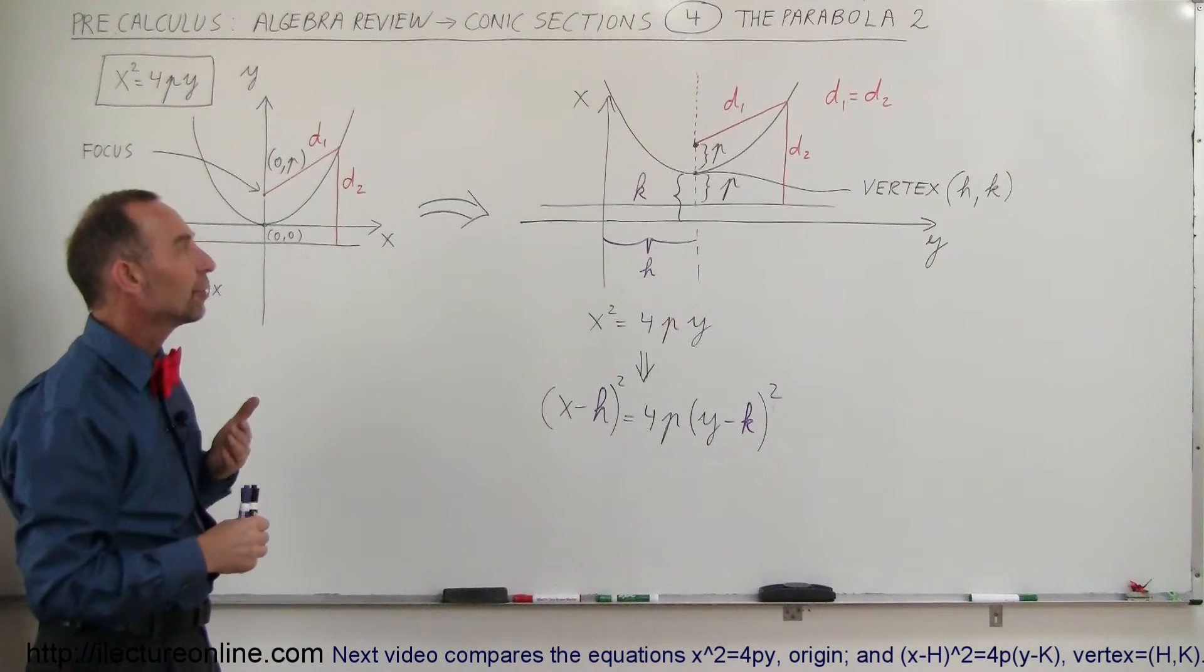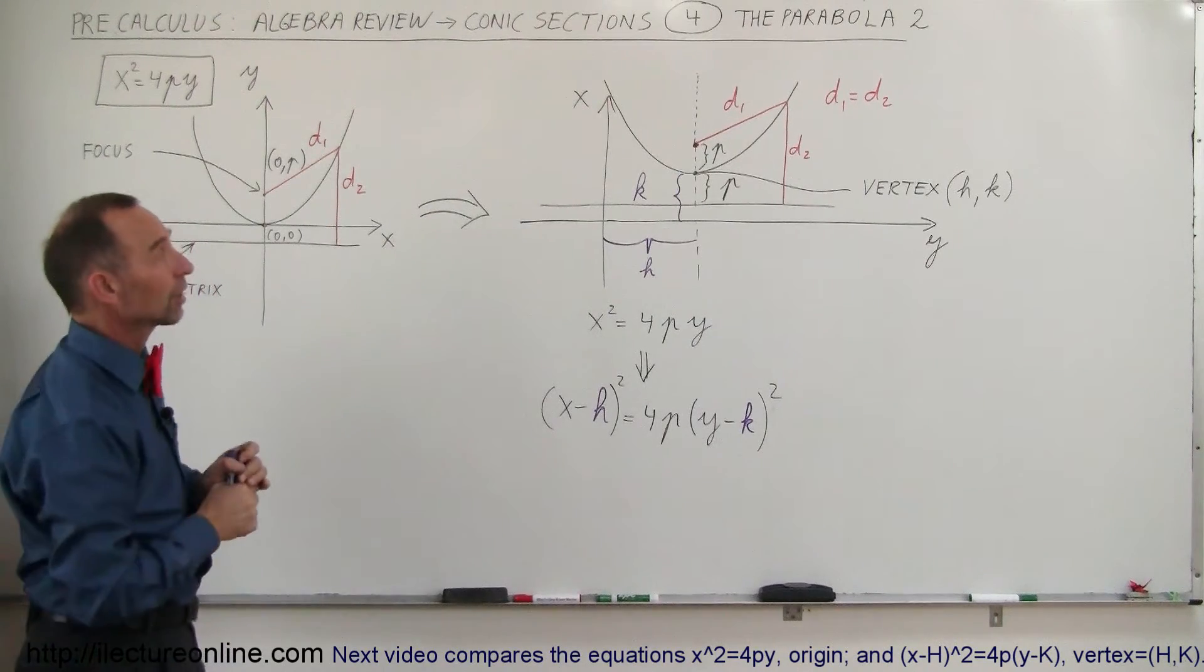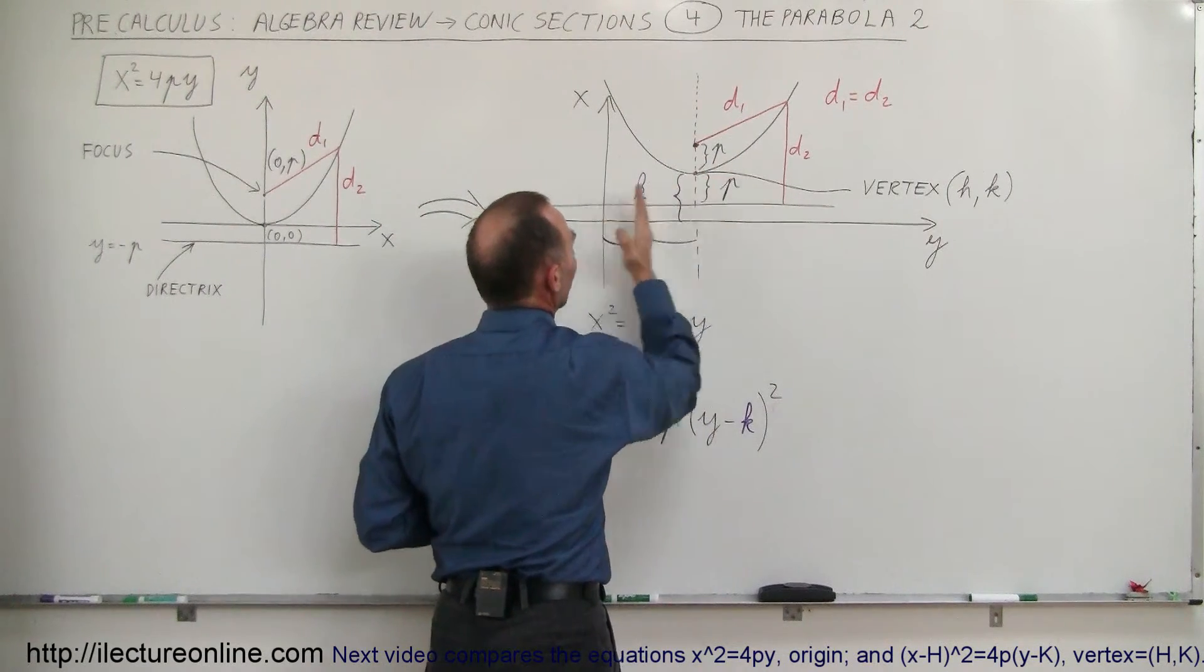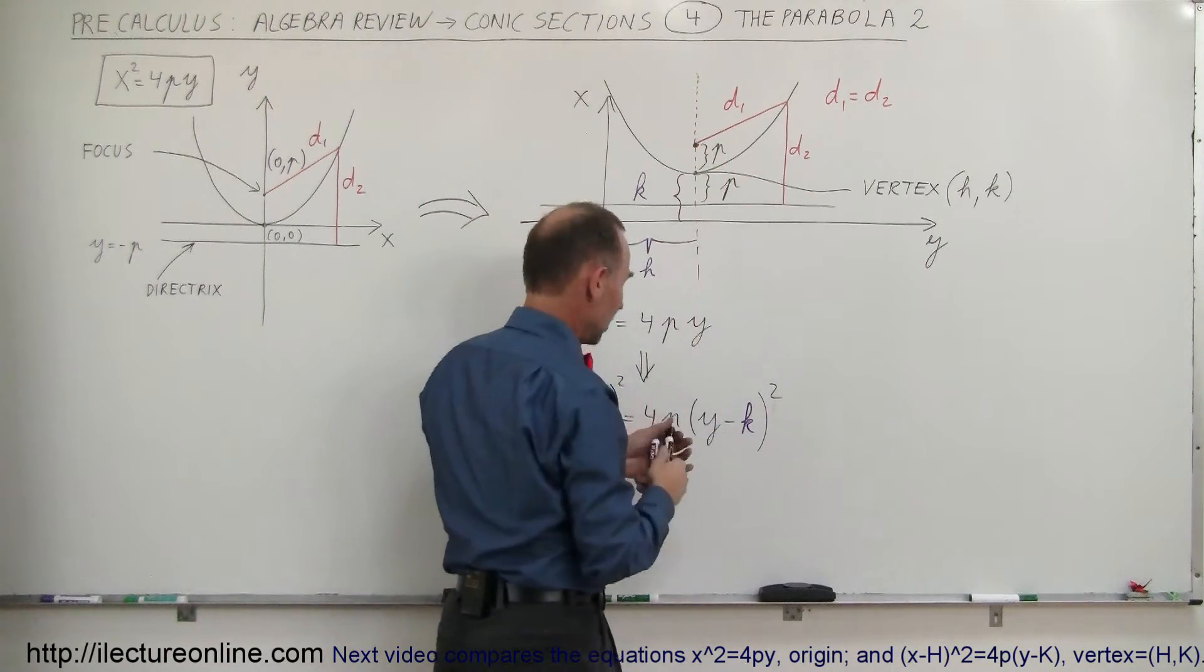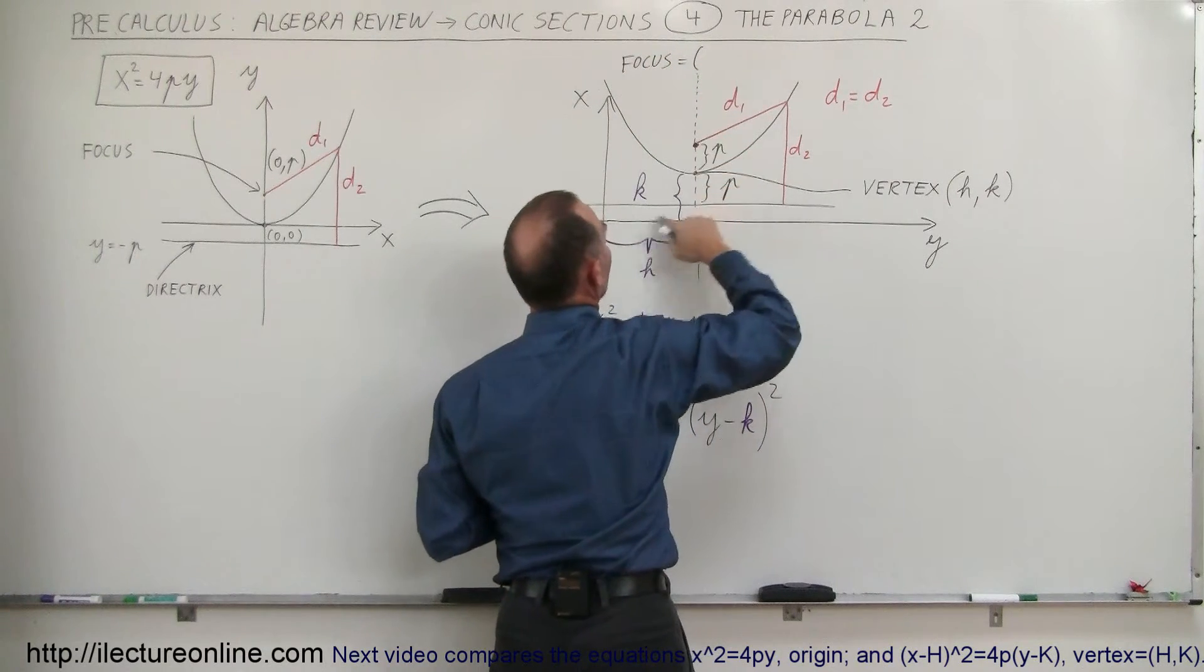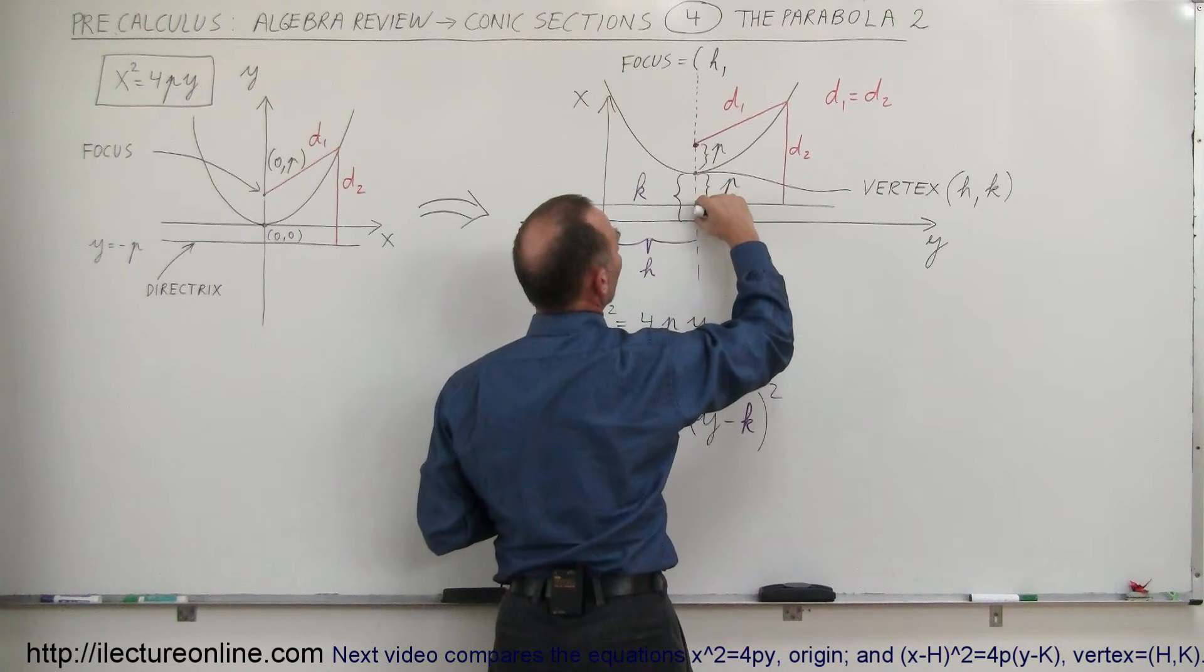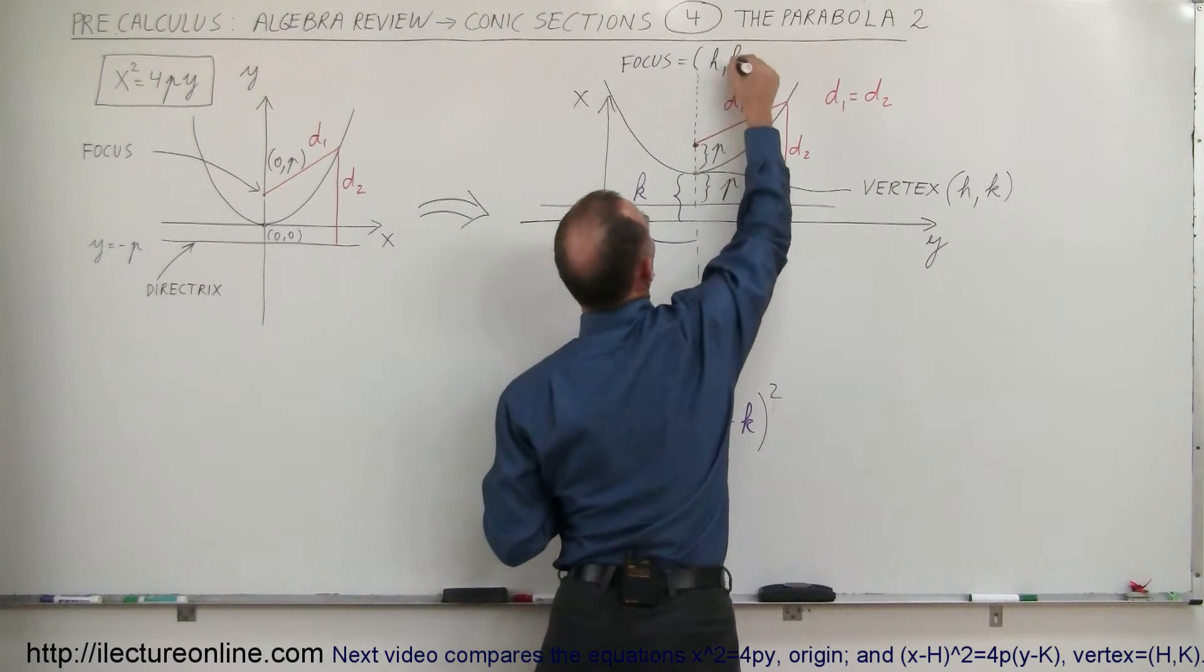Now, what does that mean for the position of the focus, and what does it mean for the position of the directrix? Well, the focus now has moved up, so we have the focus now at a position where the x value would be h and the y value would be k plus p. So the focus is equal to, for the x value it would be h, and for the y value, the directrix is up here, so we have this value k and we have plus p, so it would be k plus p.